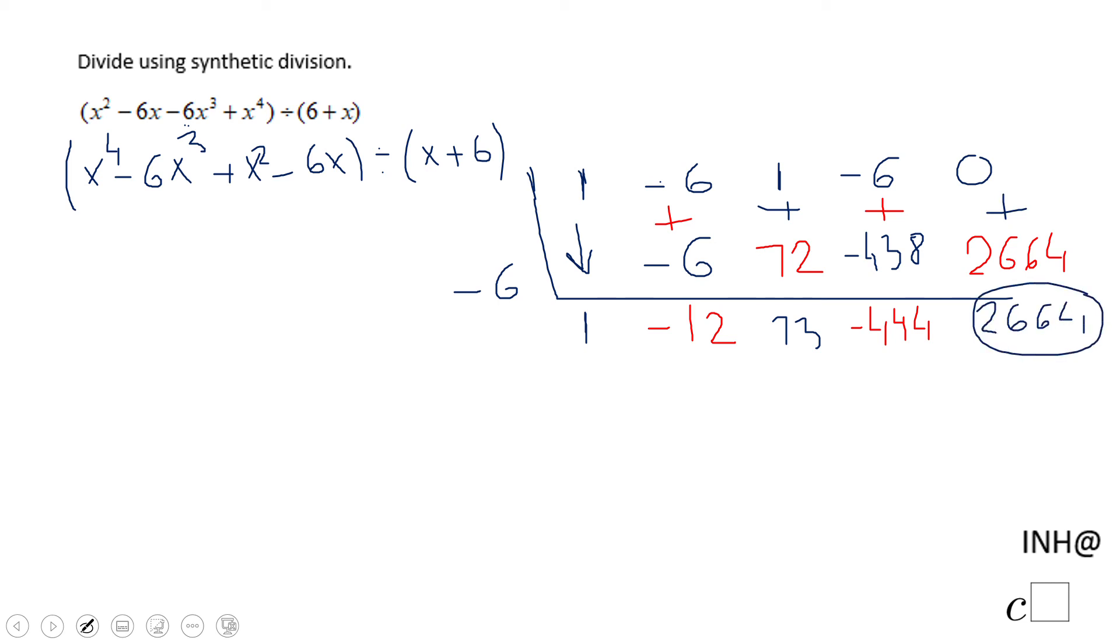A pretty large number, right? This is the remainder. So the answer for our problem is gonna be what? 1x to the third power, or just x cubed, right? Because we just have that 1, minus 12x squared, plus 73x, minus 444, plus 2664 over x plus 6. That is the final answer for our problem.